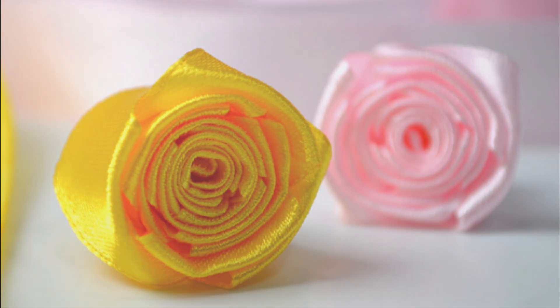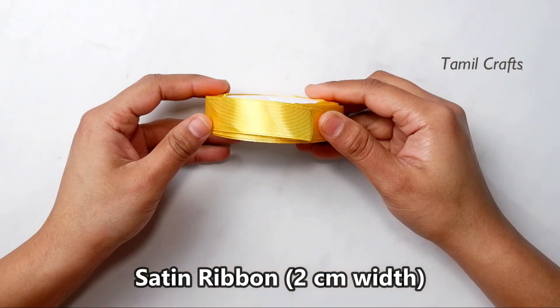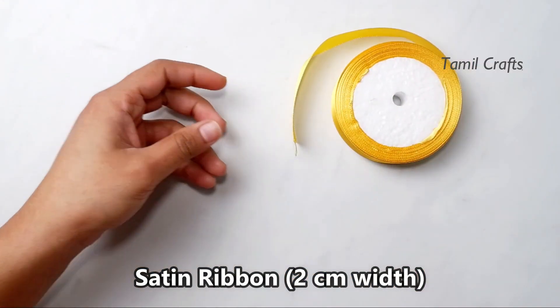Hello friends! In this video, we will see how to make a rose from satin ribbon. My yellow satin ribbon is 2 cm wide.